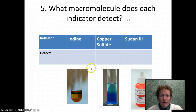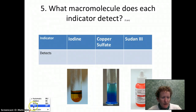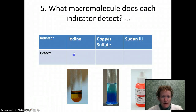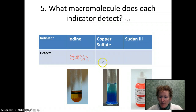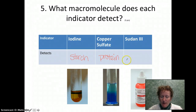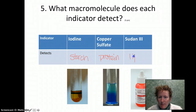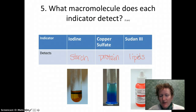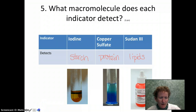Number five on your lab sheet: what macromolecule does each indicator detect? Iodine detects starch. Copper sulfate is going to detect protein - protein is an important class of molecules, and you are made out of protein. Sudan 3 detects lipids. Remember, lipids are fats, oils, and waxes - you also eat oil and fat.